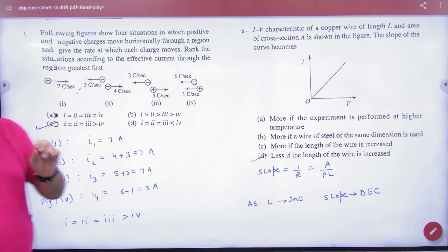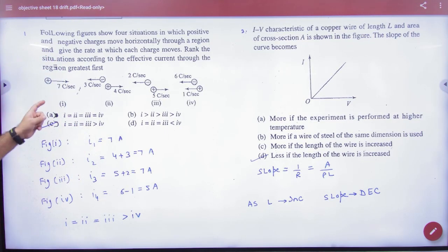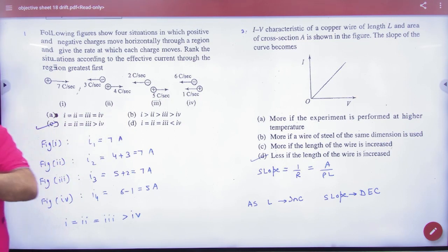In objective sheet number 18, you have 4 figures given. Tell a current, which is equal, which is unequal.